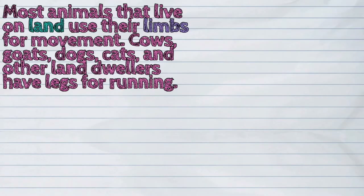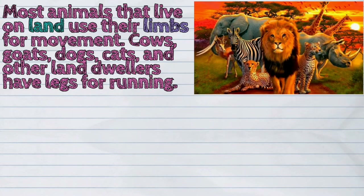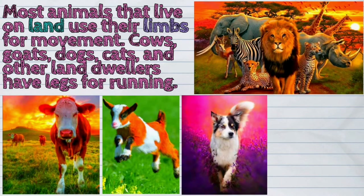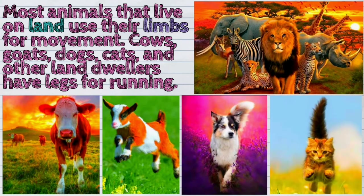Most animals that live on land use their limbs for movement. Cows, goats, dogs, cats, and other land dwellers have legs for running.